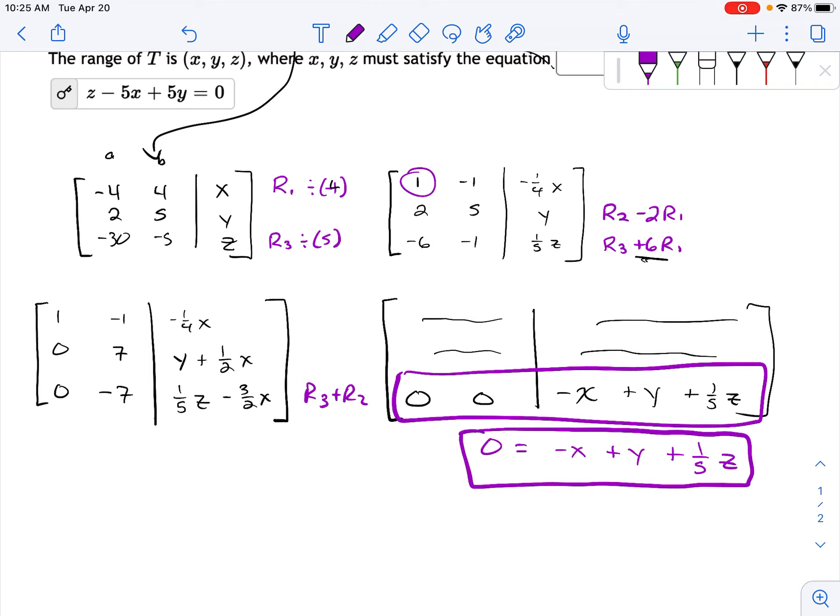Now, if you entered that into MyOpenMath, it would take it no problem. It's not exactly the same as the answer that they gave up here. But if you take this and multiply it by five, that's just going to clear out the fraction. You get minus five x plus five y plus z.